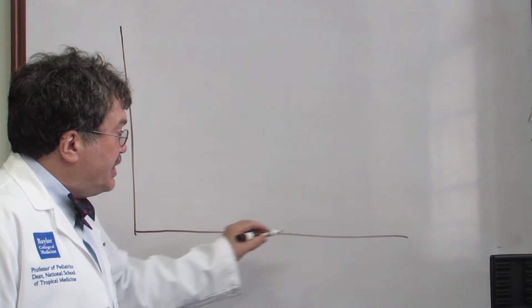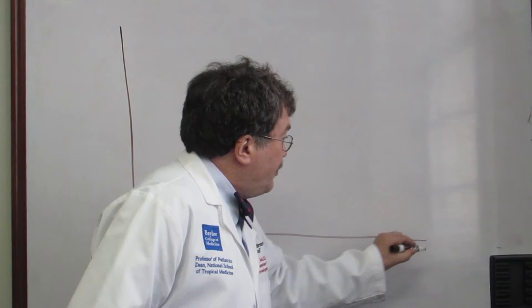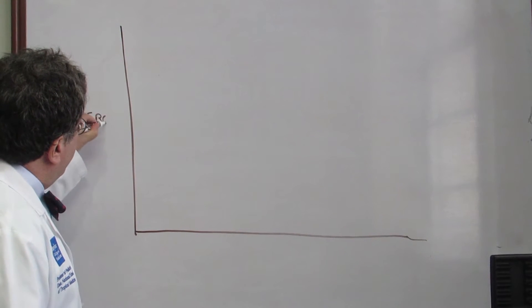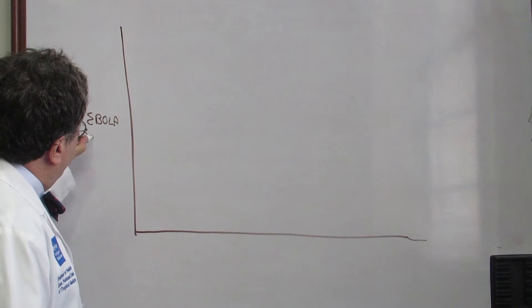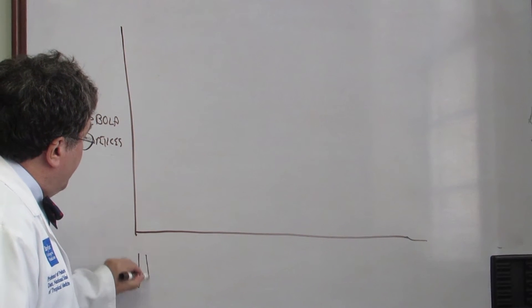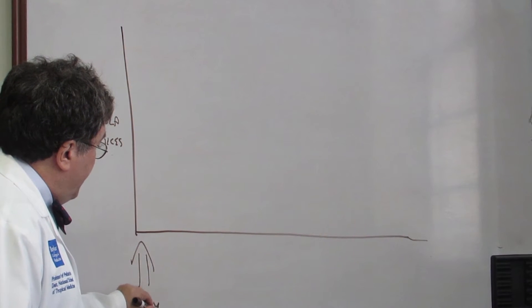If we plot on this relatively simple graph roughly the number of Ebola virus particles in a patient upon initial exposure, so this is day one when somebody's been exposed to the Ebola virus.